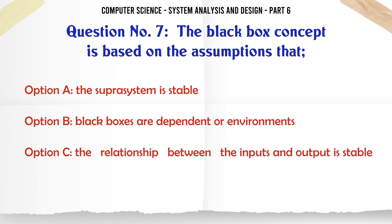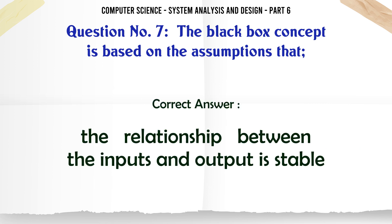The black box concept is based on the assumptions that: A. The supersystem is stable, B. Black boxes are dependent on environments, C. The relationship between the inputs and output is stable, D. All of the above. The correct answer is: The relationship between the inputs and output is stable.